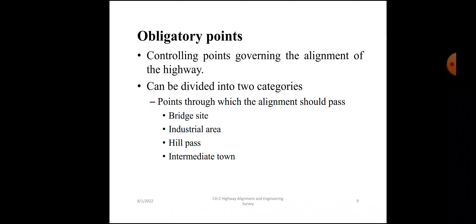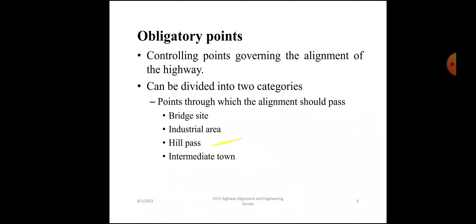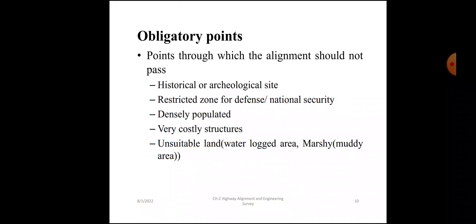Obligatory controlling points governing the alignment of the highway can be divided into two categories. Points through which the alignment will pass: bridge site, industrial area, hill pass, intermediate town. Points through which the alignment will not pass: historical or archaeological site, restricted zone for defense or national security, densely populated areas, very costly structures, unsuitable land, waterlogged area, and marshy or muddy areas.